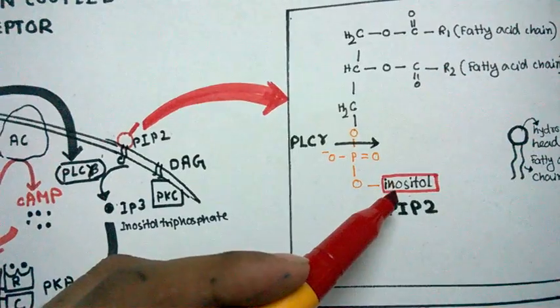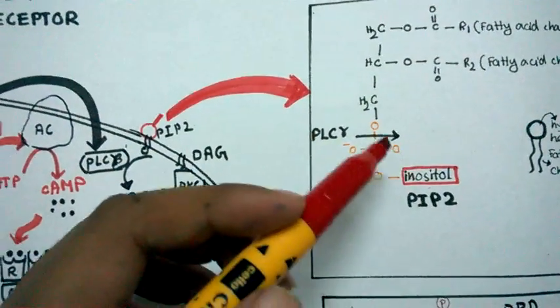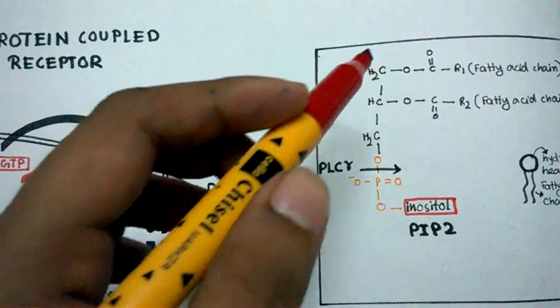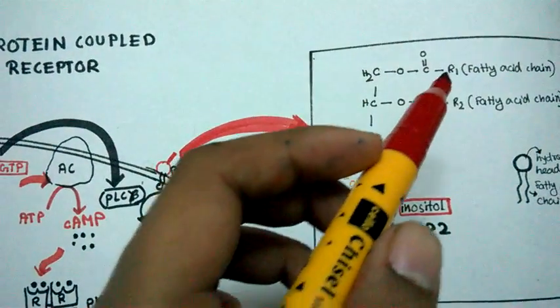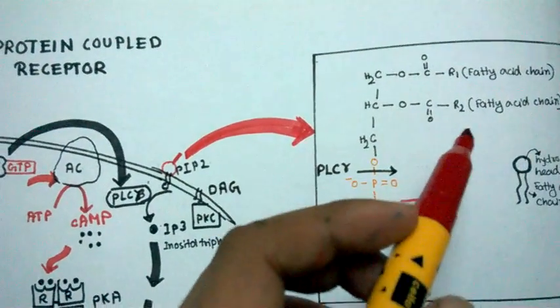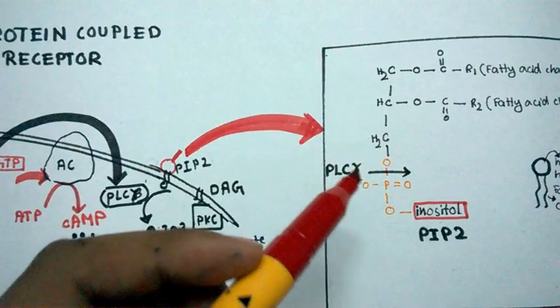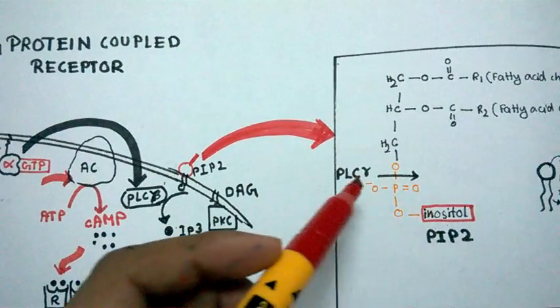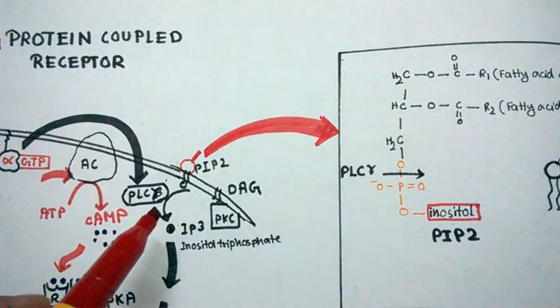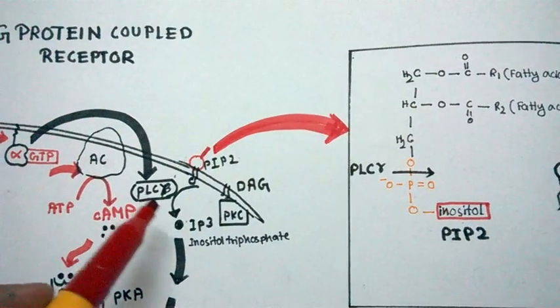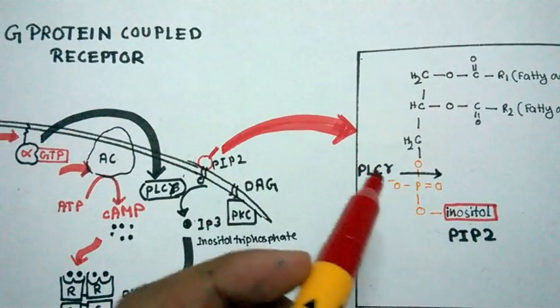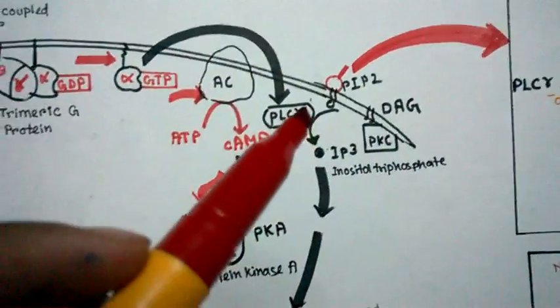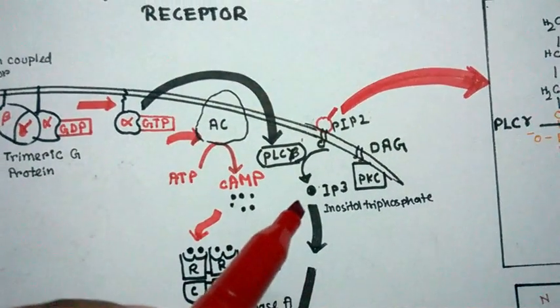The PIP2 molecule has an inositol group here with a phosphate phosphodiester linkage and a chain where two fatty acids are linked. Phospholipase C beta or phospholipase C gamma will cleave in this area, at this bond.